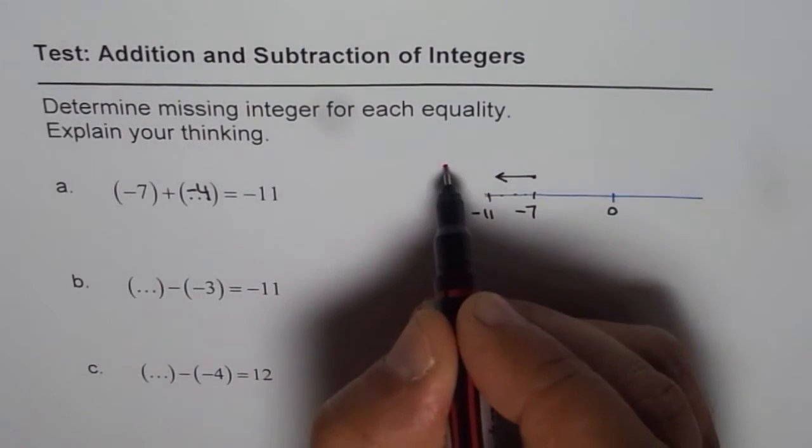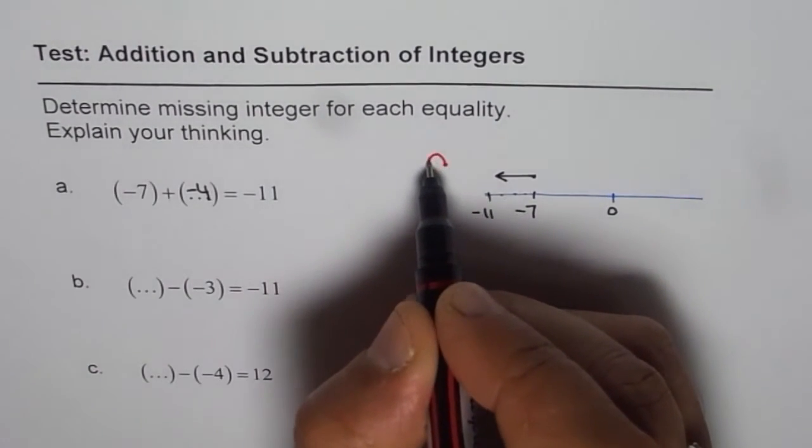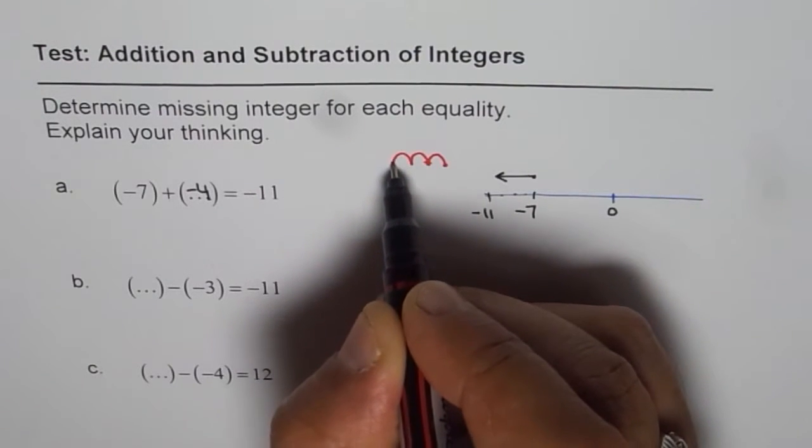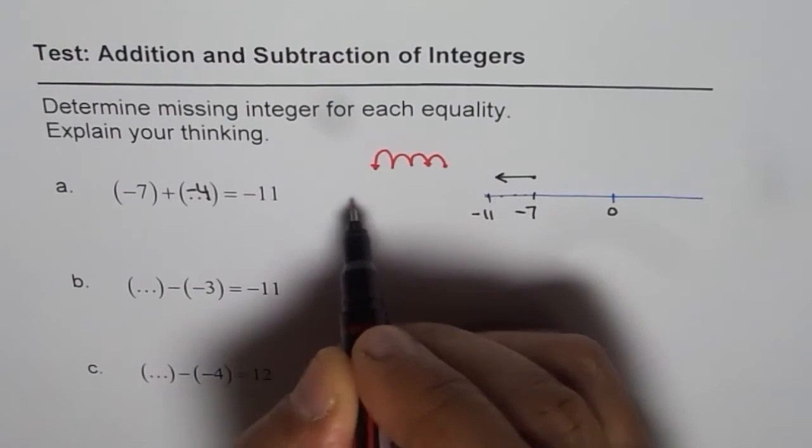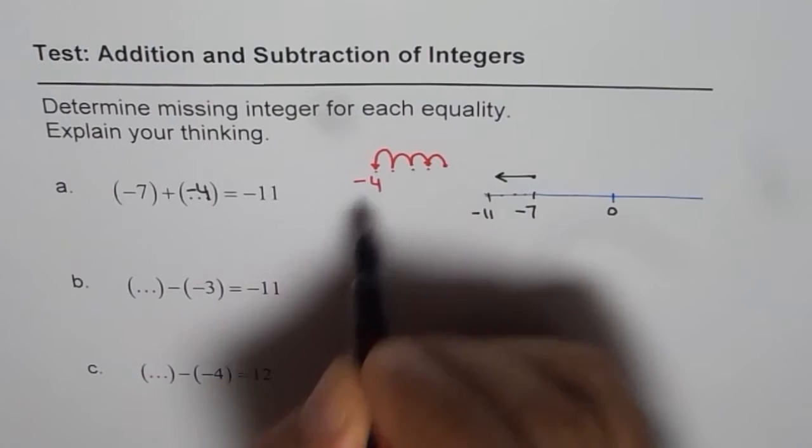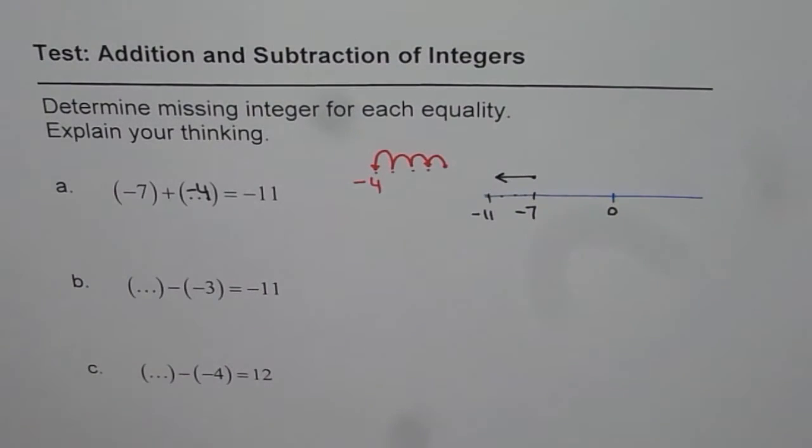So from 7, minus 7, it is minus 8, minus 9, minus 10, and minus 11. Then, you get to this point. So it is 1, 2, 3, 4, negative 4. Is that okay? So that is also how you can achieve the result.